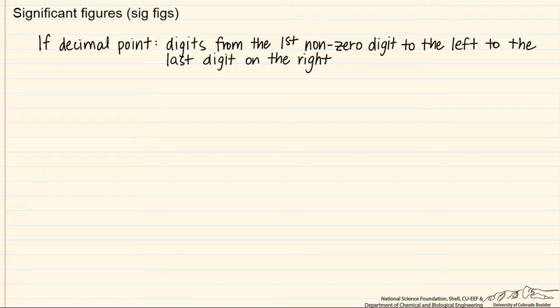Or if there isn't a decimal point, so we have no decimal point, then it's the last non-zero digit of the number. So let's take a look at some examples.